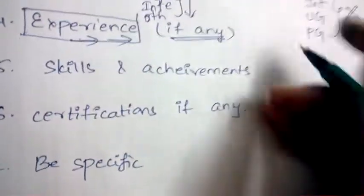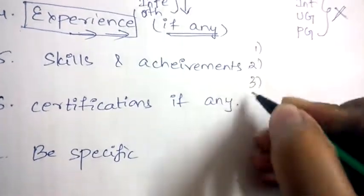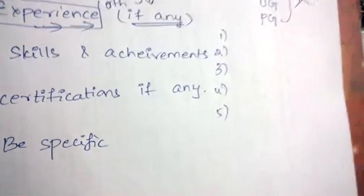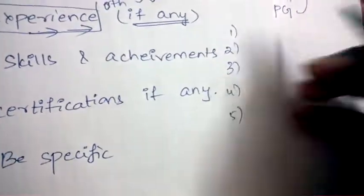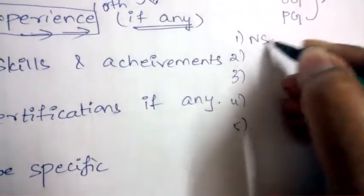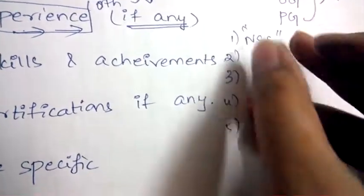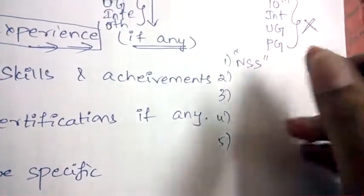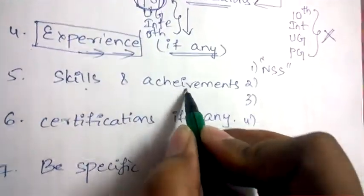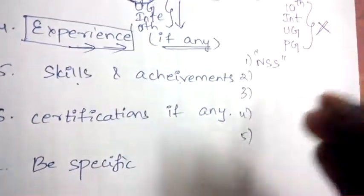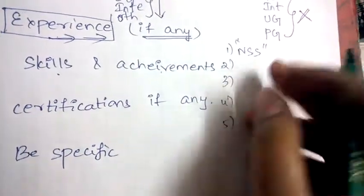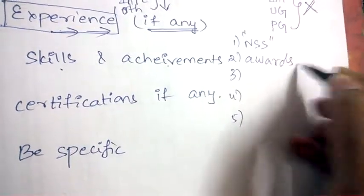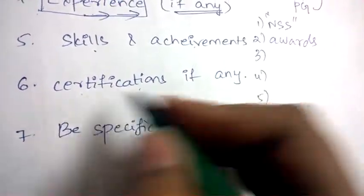Next, list your skills and achievements in order. If you have any special skill or achievement — for example, being an NIIT candidate — highlight it with double quotation marks so HR can easily notice it; this will be an added advantage. Always mention your skills and achievements clearly, highlight them in double quotations, and you can also mention any awards you have received.